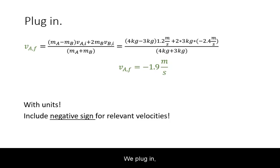We plug in with units and we are going to be very careful with the negative signs here. Remember, the second mass had an initial velocity that was negative.